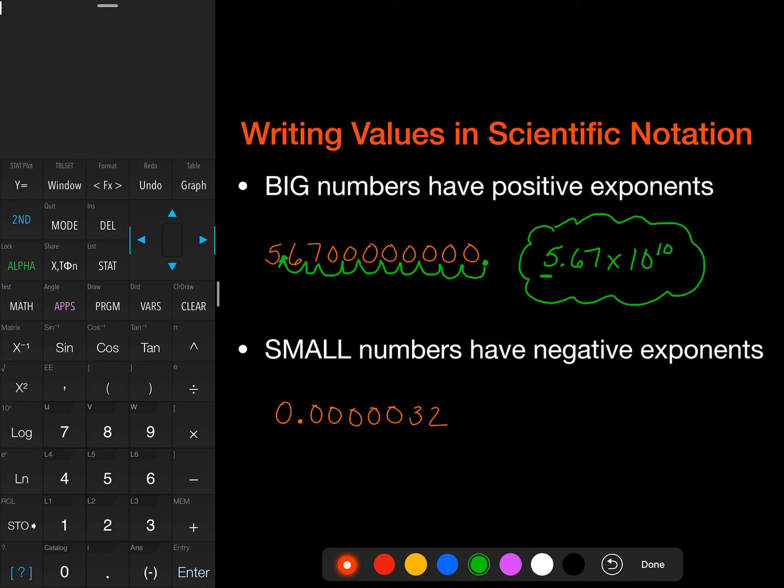If we have a small number, they have negative exponents. And so we're going to move our decimal, instead of moving it to the left to establish our number, we're going to move it to the right. So in this case, we're going to take the decimal that's already here, and we're going to move it back 1, 2, 3, 4, 5, 6 places and put it right here. So that's going to give us 3.2 times 10 to the negative 6.